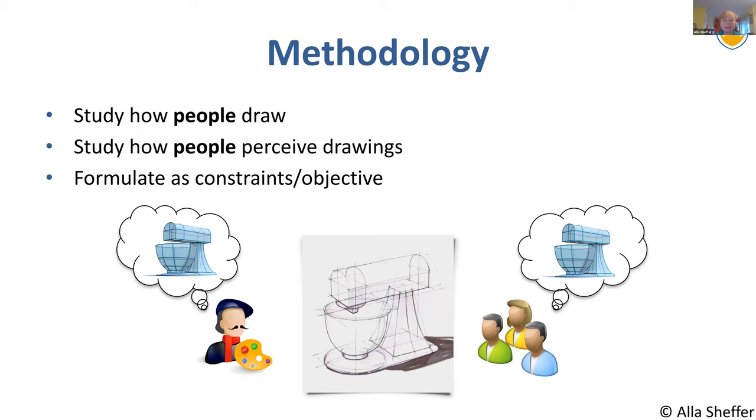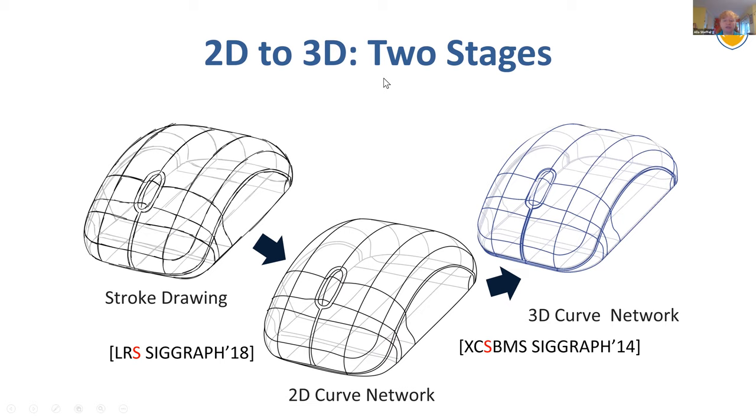So let's look at this problem of 2D to 3D in the wild. The methodology I'm going to argue here for is to study how people draw and how people perceive drawings. And then try to formulate this knowledge as constraints or objective. There are really two stages in this process. You go from freehand strokes where people use overdrawing to a very clean network of 2D curves, where we have full information. And then we go to 3D.